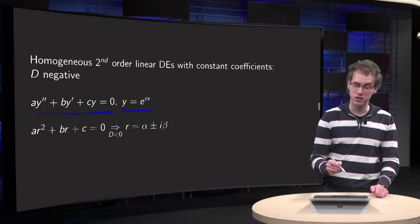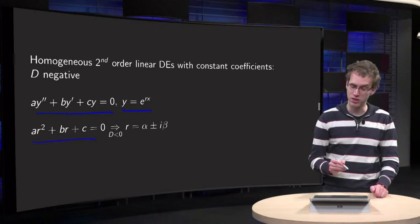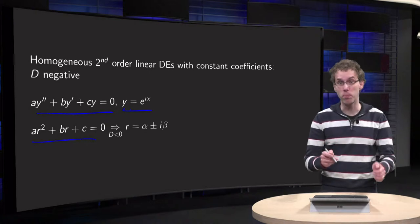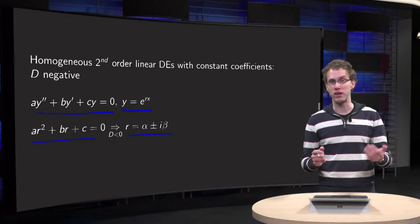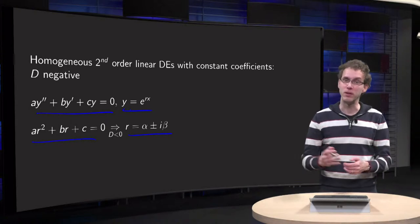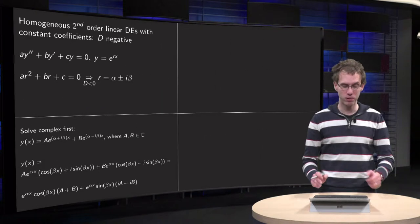We plug in the familiar ansatz. We get ar² + br + c = 0. But now d is negative, so we get complex solutions. So r is of the form α ± iβ. Alpha and beta are real, but the total r is a complex number.